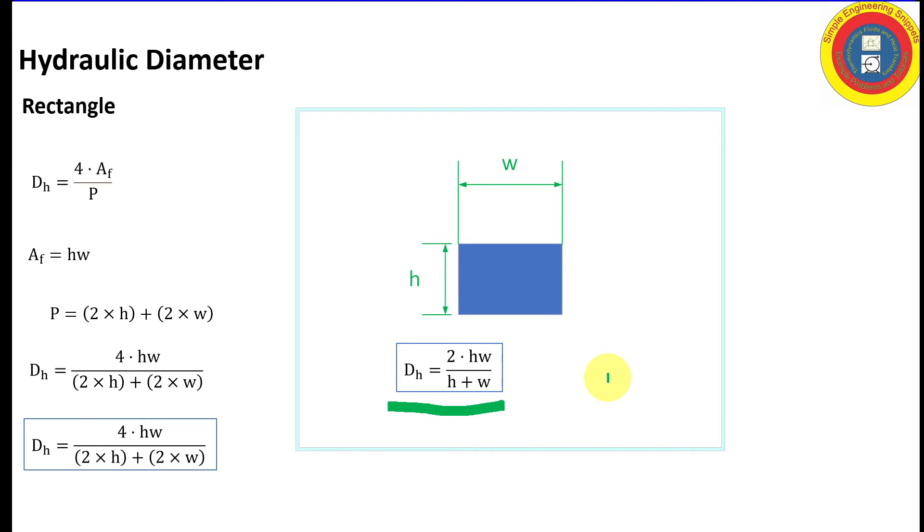However there are some cases where we could simplify this and that case would be when the width is much much greater than the height. I did do this in my other instructional video involving infinite plates. If that is the case the hydraulic diameter can simplify as shown. And the hydraulic diameter can be accurately approximated as 2 times the height.